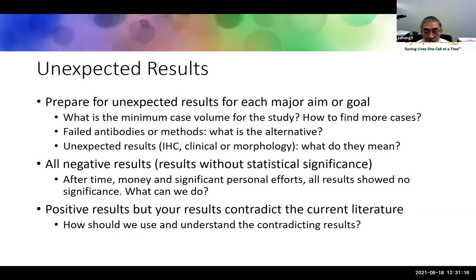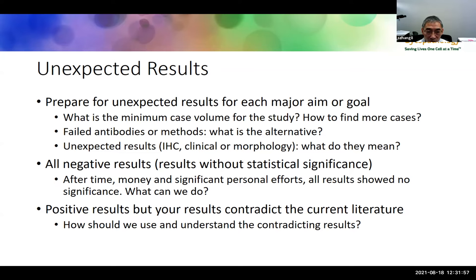After all your hard work, the results may not be what you expected, or may be entirely negative. We often see fellows and residents spend hours and days on a project only to find no significant clinical importance or no statistical significance. It's important to know whether your case number is sufficient to generate a powerful result. If a method you planned to use fails, do you have an alternative? For unexpected IHC results, consider whether you have an alternative antibody or method.